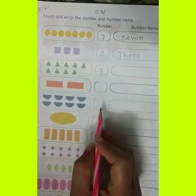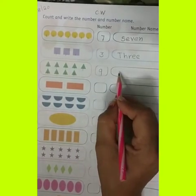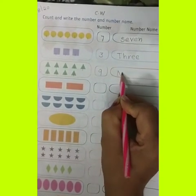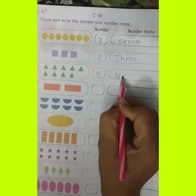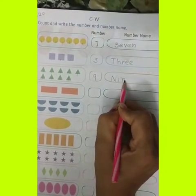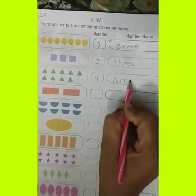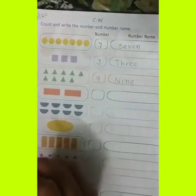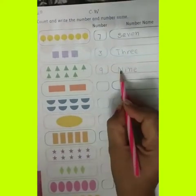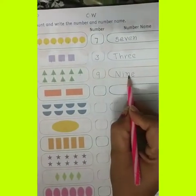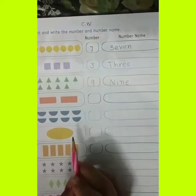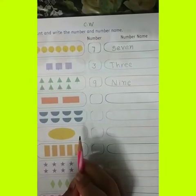What's the name of number 9? N, I, N, E — 9. Again: N, I, N, E — 9.